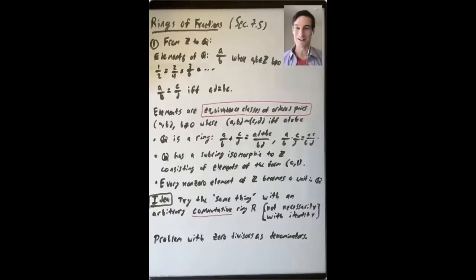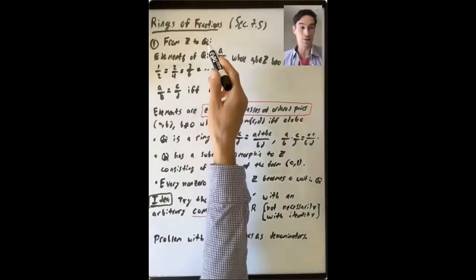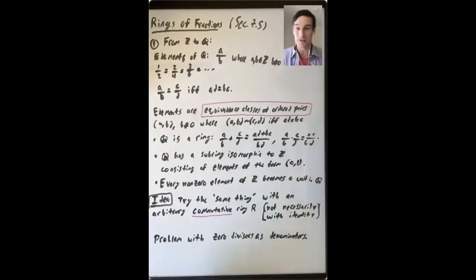In this first lecture, we'll talk all about rings of fractions following section 7.5 of Dummit and Foote. We'll start this discussion by talking about the example that is most familiar — that is, going from the integers Z to the rational numbers Q.